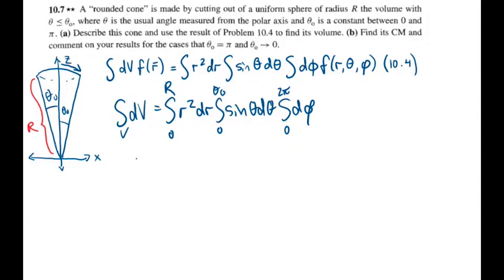So that equals, bringing out the 2pi, let's do the integration for r. The integral of r squared is r cubed over 3, so that'll be capital R cubed over 3. And then we're integrating sine theta d theta.